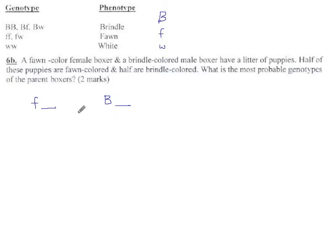And they have puppies, which are 50% fawn, which would make them little F blank. And the other half are Brindle, which are big B blank. So, what is the most probable genotype for the parent boxers?